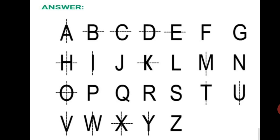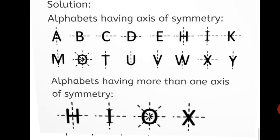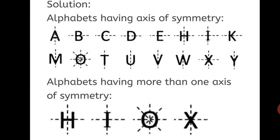Let's write the answer. Alphabets having axis of symmetry: A, B, C, D, E, H, I, K, M, O, T, U, V, W, X, Y.